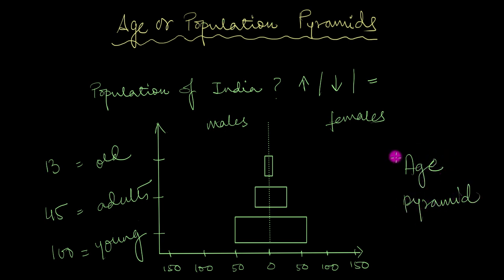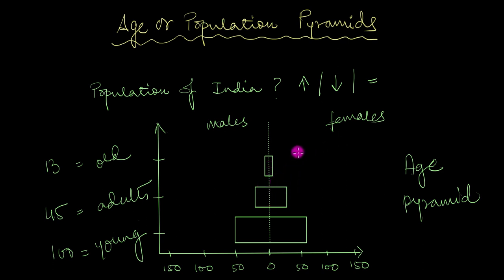We'll be talking about this age pyramid — also called a population pyramid — in more detail. It is the shape of this pyramid that gives us the necessary information to predict the status of a population. It tells us whether a population is growing, shrinking, or staying constant. It also tells us birth rates, death rates, how long members can expect to live, and the overall rate at which the population is changing.